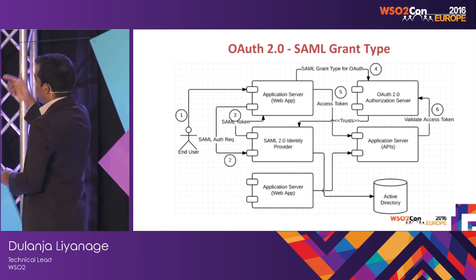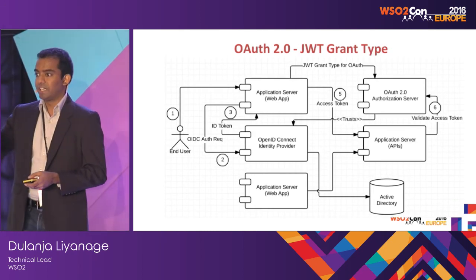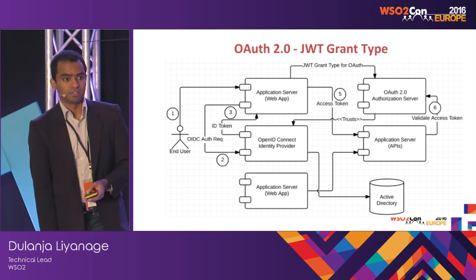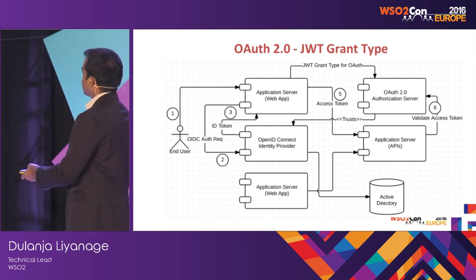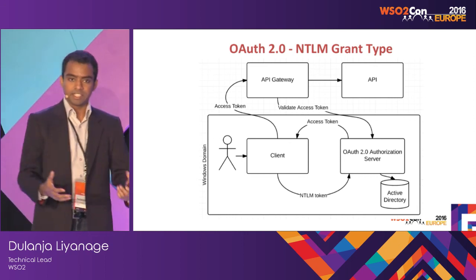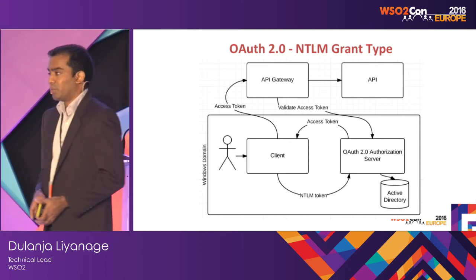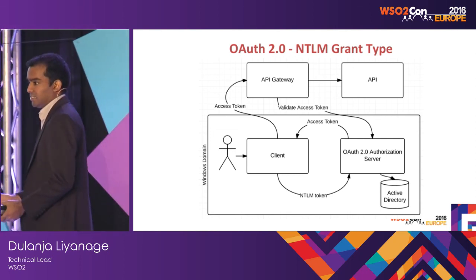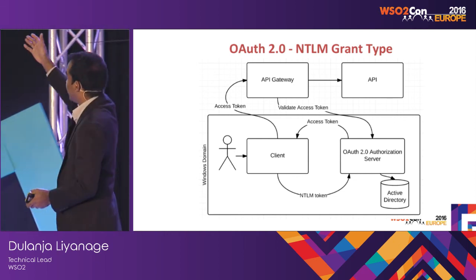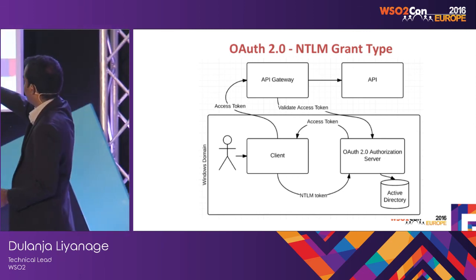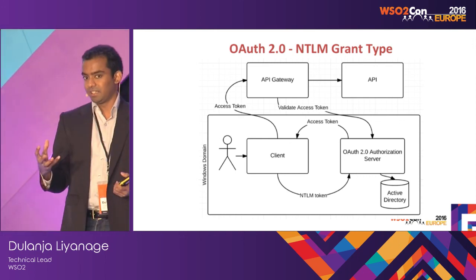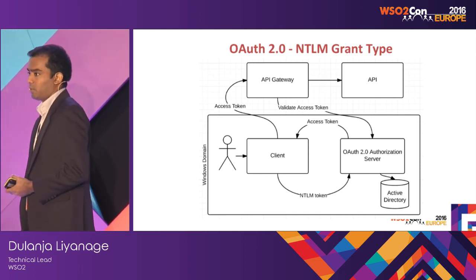Similarly, if the authentication mechanism is OpenID Connect, it sends a JWT. You can send the JWT and get an access token in exchange. If the environment is a Windows environment and the user is already authenticated to the Windows domain, the user doesn't want to authenticate again to access an API. For that, there is the NTLM grant type. If the user is already authenticated to the Windows domain, WSO2 API Manager can grab the Windows authentication and provide an access token on behalf of the user.